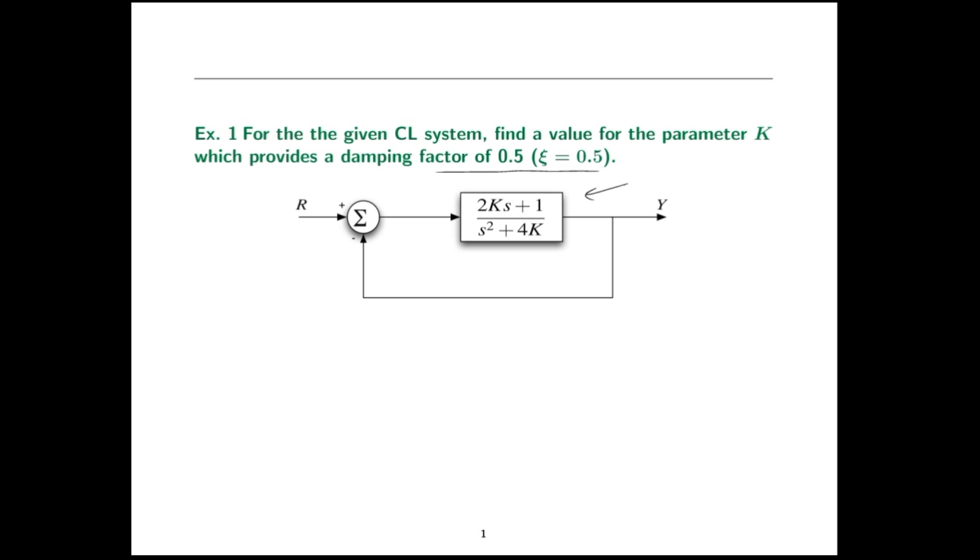Let's go at it. We'll make the closed loop transfer function. It's going to be the forward path over 1 plus the forward path. So what I'll get is 2Ks plus 1 over s squared plus 4K plus 2Ks plus 1.